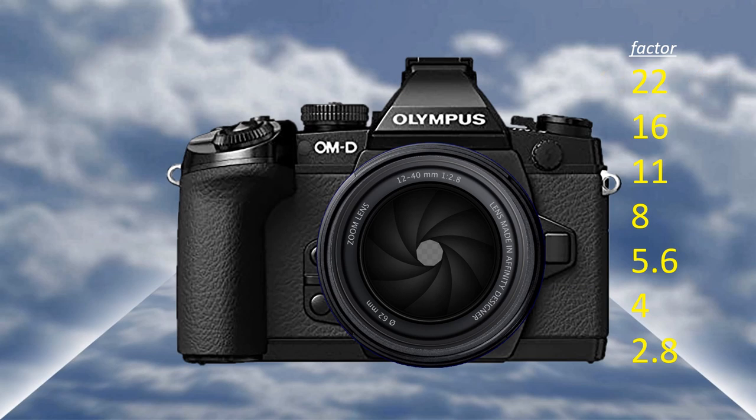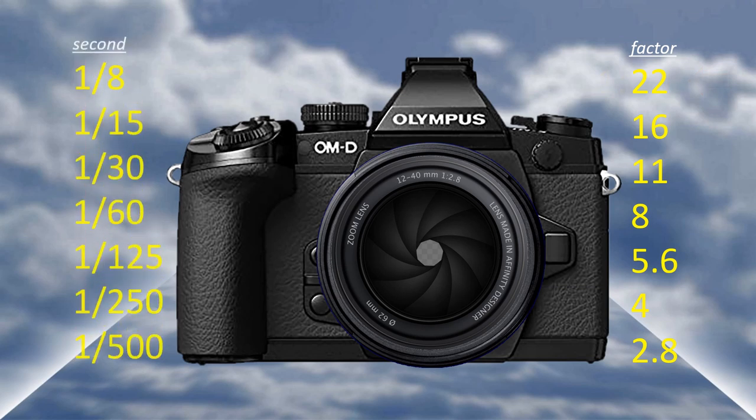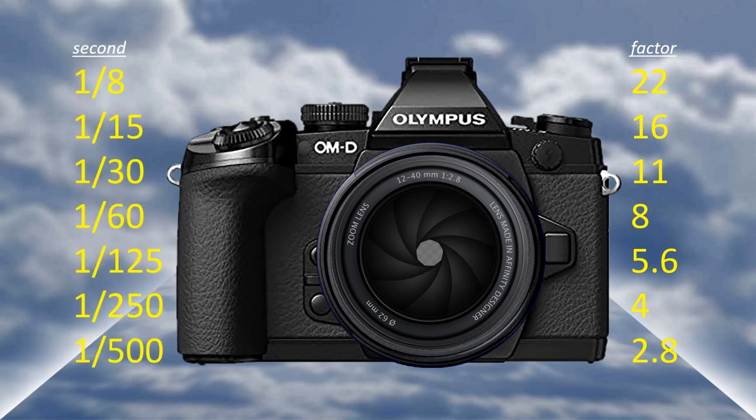Working in conjunction with apertures are shutter speeds — a slightly misleading description, but it controls the amount of time the aperture remains open. Canon uses the term 'time value,' which is perhaps more accurate. Either way, it is shown by a different set of numbers that are easier to understand.